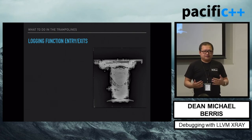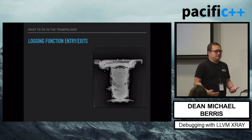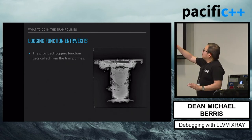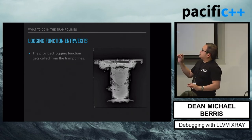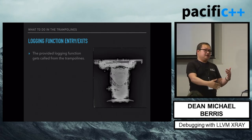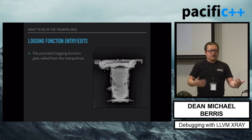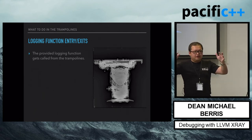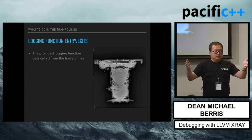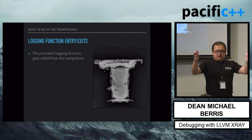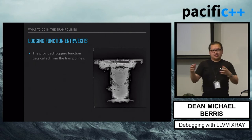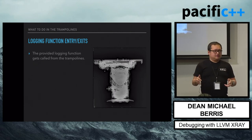What do we want to do when we have these instrumentation points? We want to do something useful. Provided logging functions get called from the trampoline — say we want to get the timestamp, the CPU ID, the thread ID, and the function ID, and write a nice little record in some in-memory buffer that's really cheap to write to. If we do that at the start of a function and say it was entered at this point, and at the exit say it was exited.